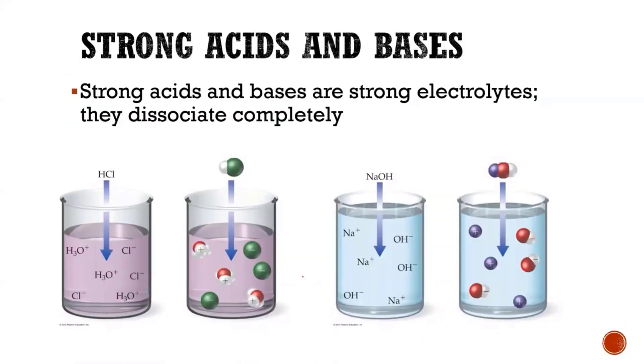So strong acids and strong bases, what do they do? They completely break apart. So the way they show this schematically is if I take HCl and I throw it in water, water molecules get protonated and I got a bunch of hydronium. And then the chloride ion, which is the conjugate base, I got a bunch of those. But it completely breaks apart.